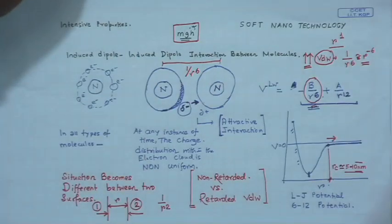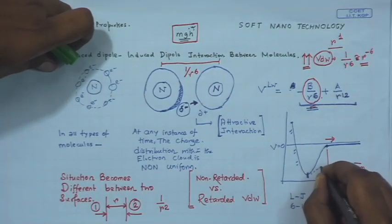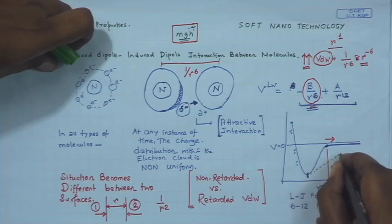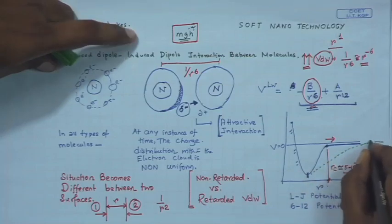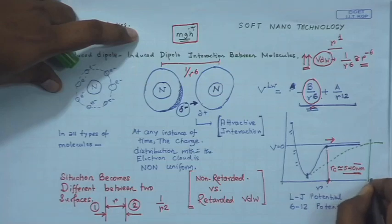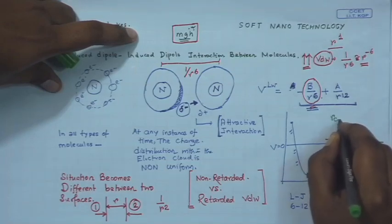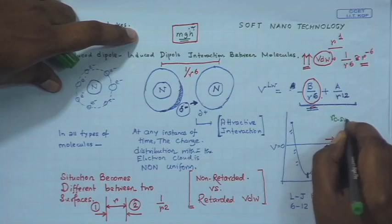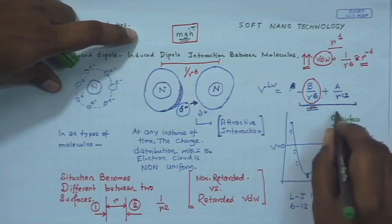If you superpose on the same plot, the interaction becomes longer range, and this r_c for surfaces is arguably of the order of 100 nanometers.